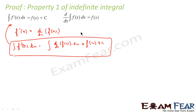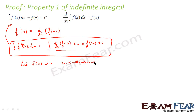Now let's prove the second property. In fact, we actually used this second property in the proof above. Let capital F(x) be the antiderivative of small f — that is, d/dx of F(x) equals f(x). Now let us integrate both sides.